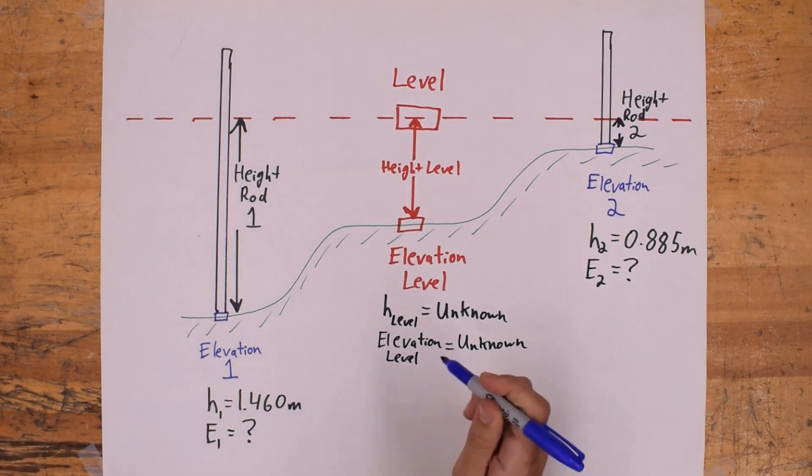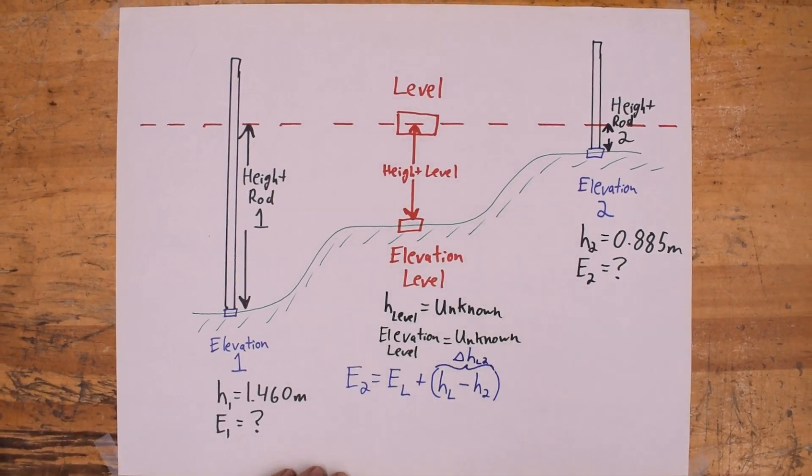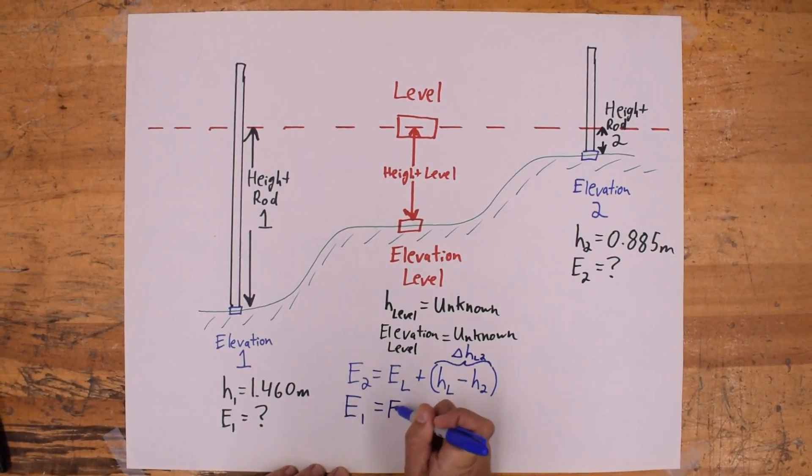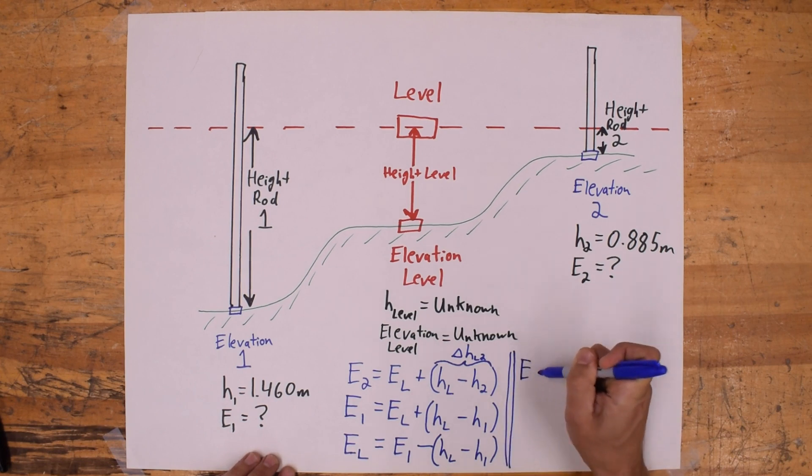So if we want to describe an equation for elevation 2, it's equal to the elevation of the level plus the difference in height between the instrument and the height of the rod. The same applies for the elevation at 1. So rearrange one of those equations. We get the elevation of the level equals the elevation at 1 minus the difference between the height of the level and the height at 1.